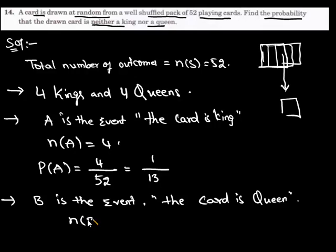Number of favorable outcomes to event B is 4 and the probability of event B is 4 upon 52, which is equal to 1 upon 13.